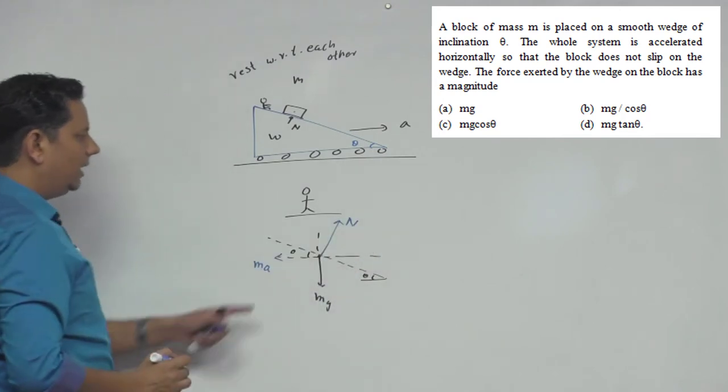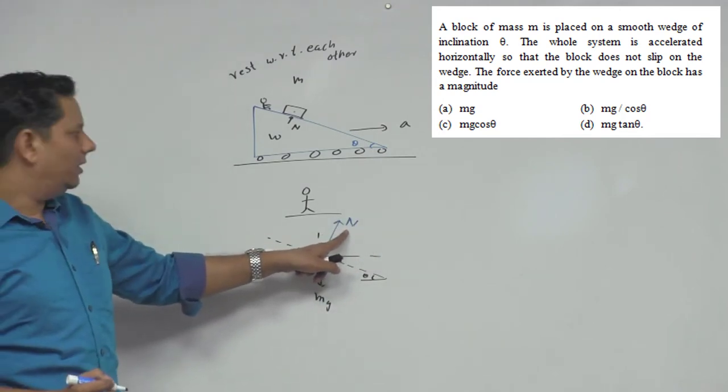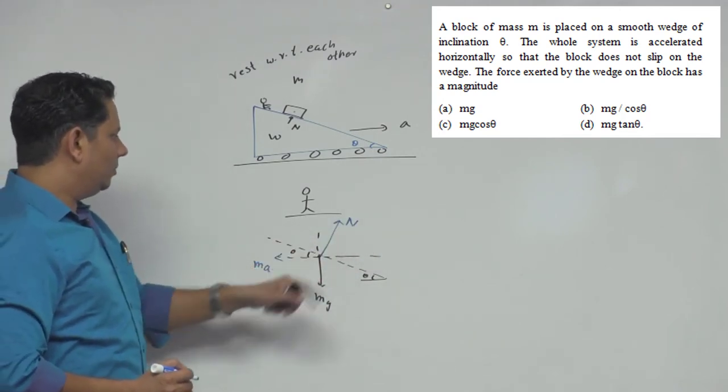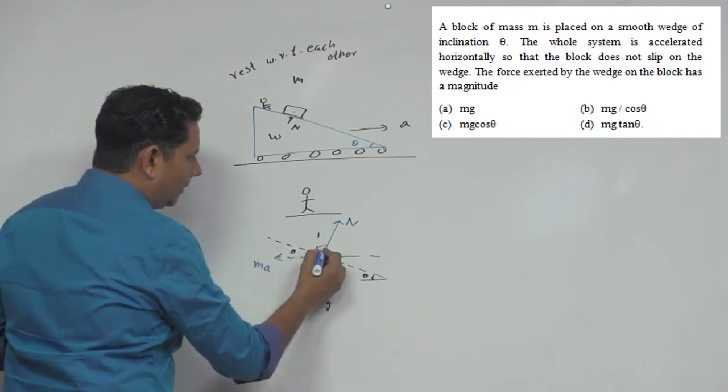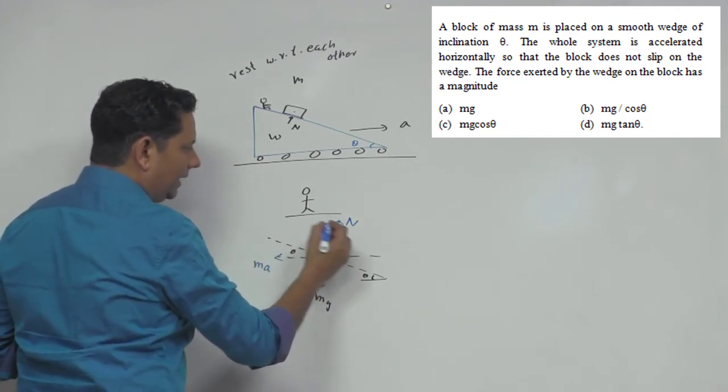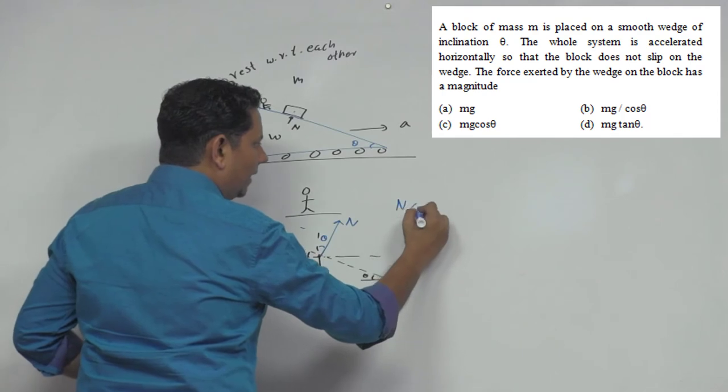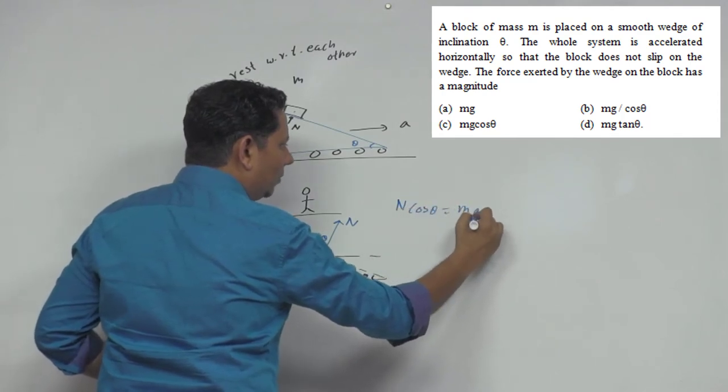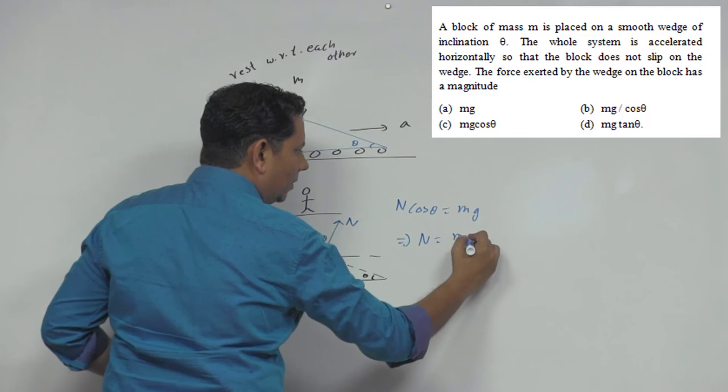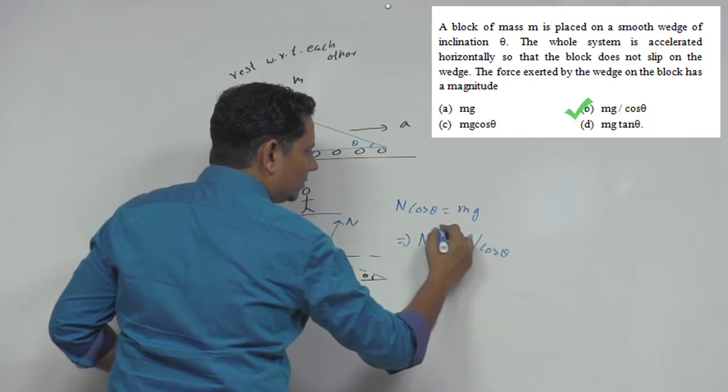Looking at the normal force components, there is a theta angle here. The normal component in the vertical direction gives us: N cos theta equals Mg, which implies that the normal force N equals mg divided by cos theta.